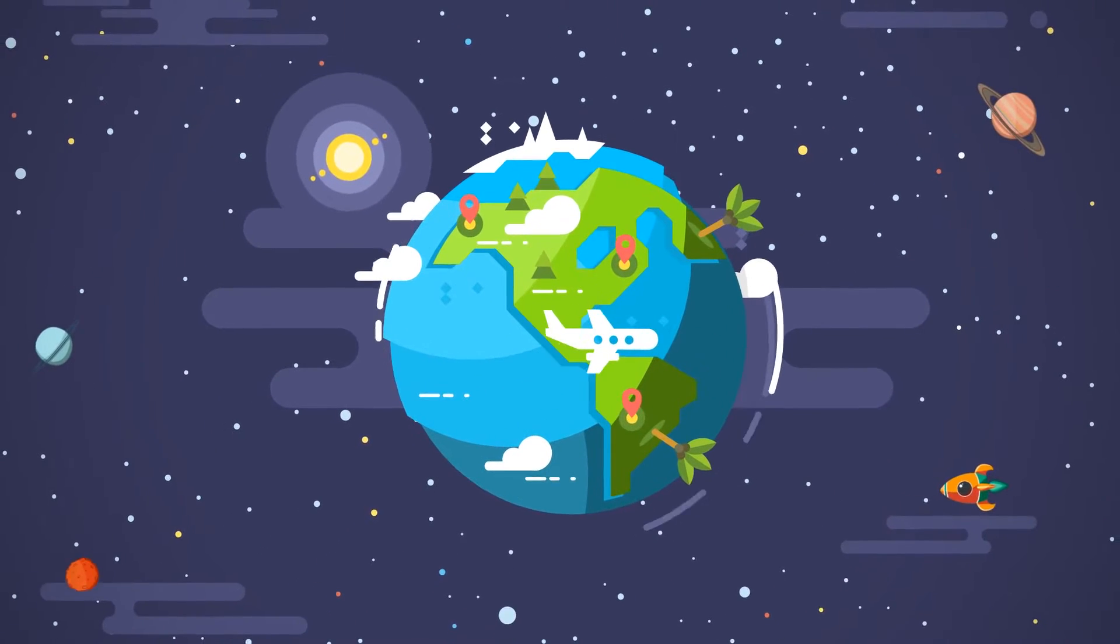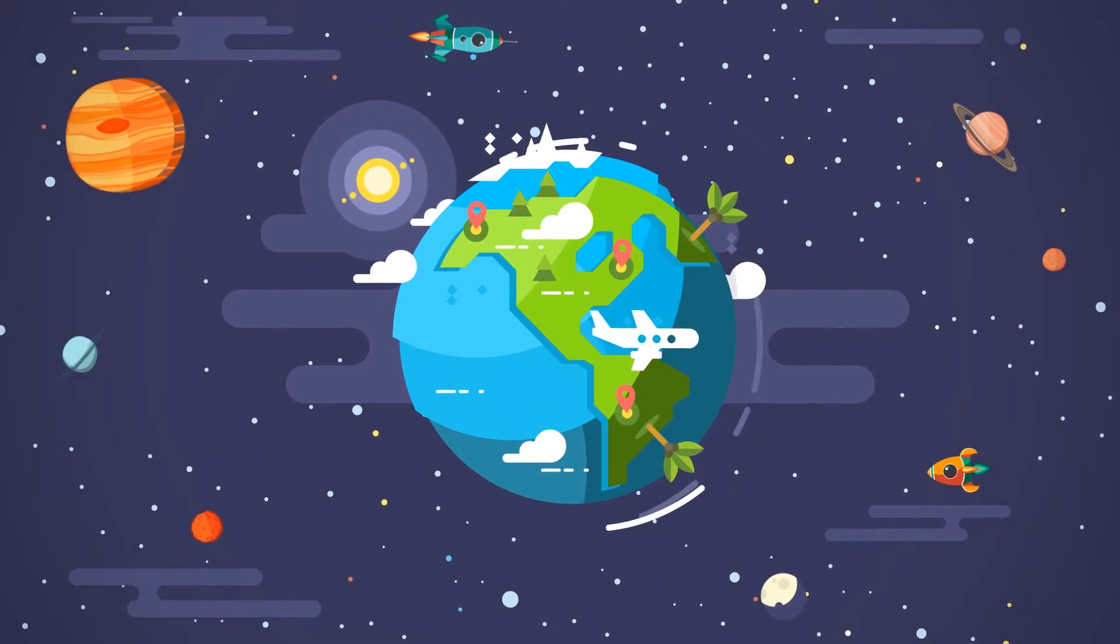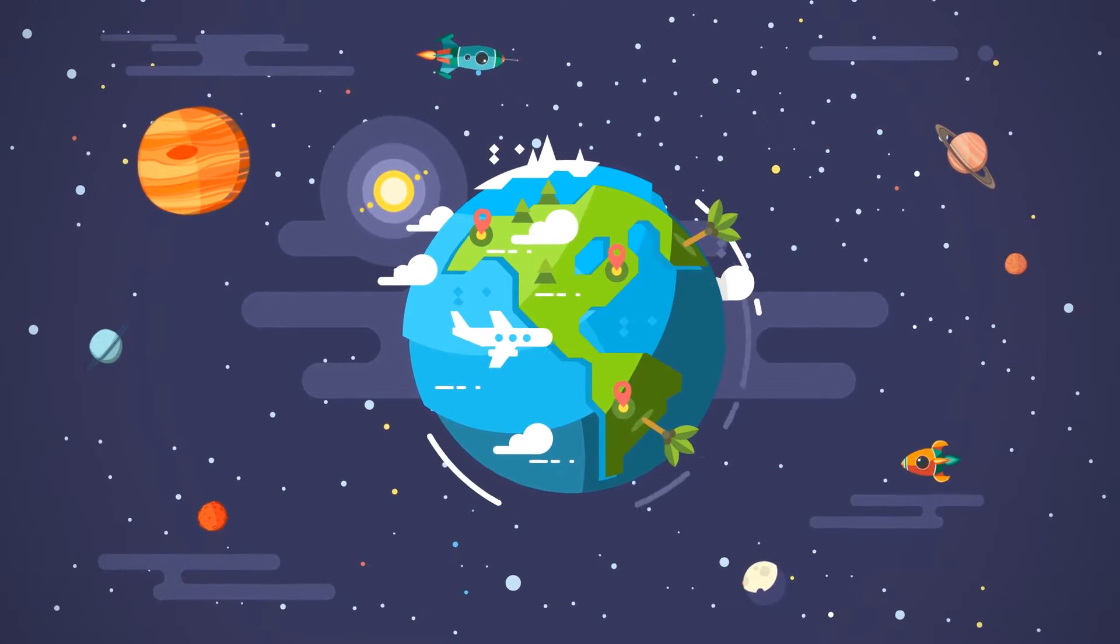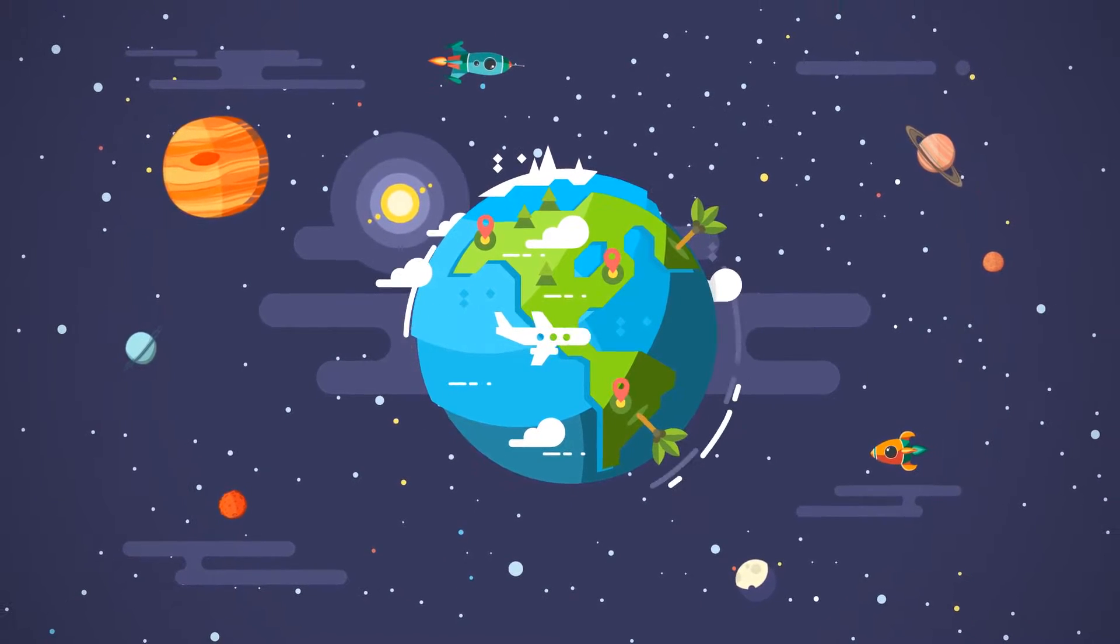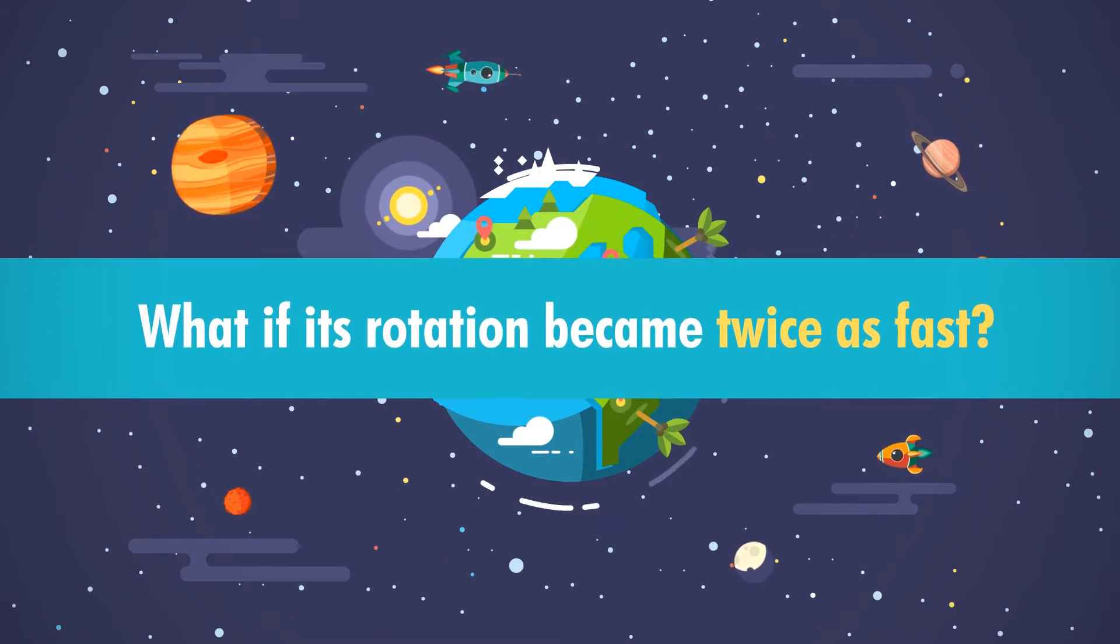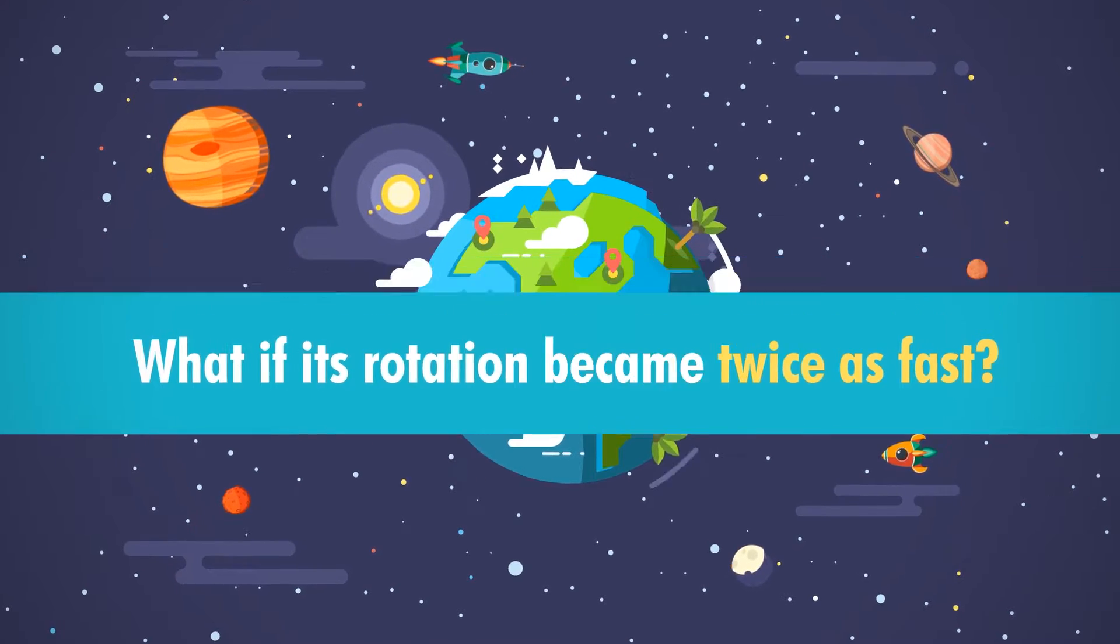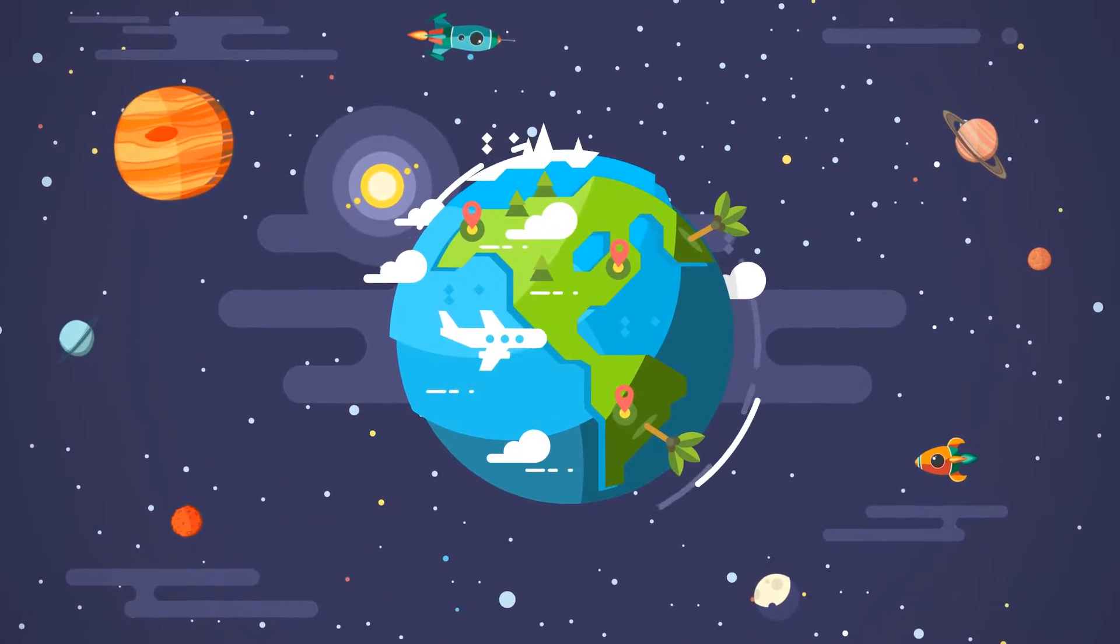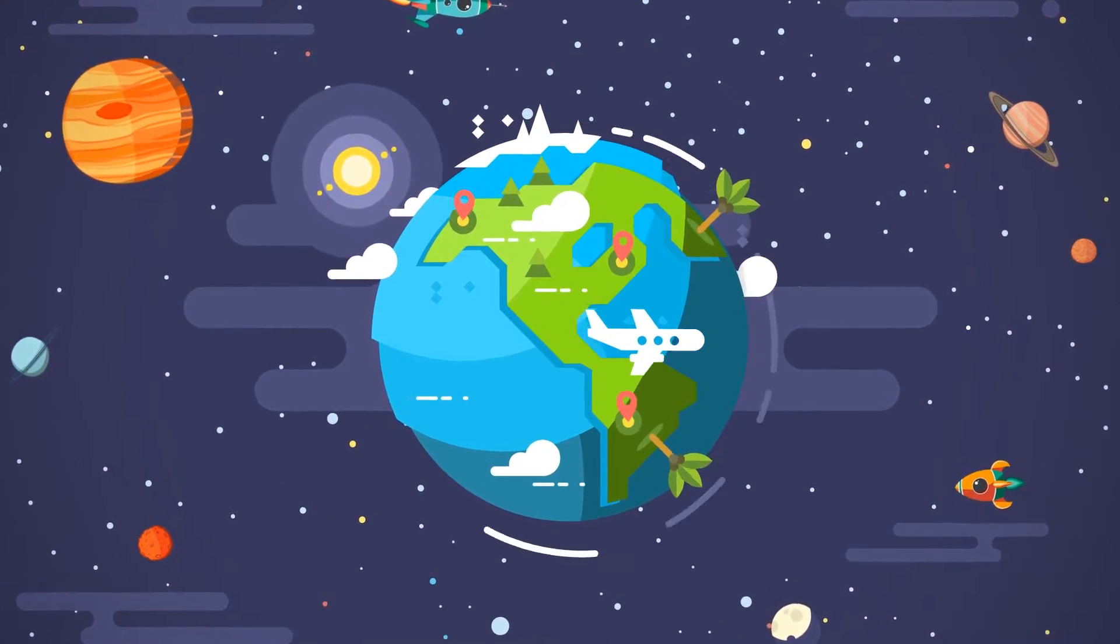Our planet provides a delicately balanced place for us to call home, but have you ever wondered what would happen if something as simple as the way the Earth spins was to change? What if its rotation became twice as fast? Would life as we know it change forever, or would it have relatively little impact on us?